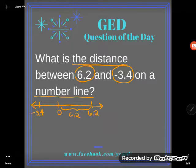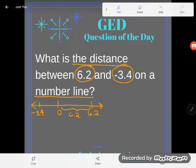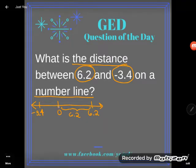Negative 3.4 is even further away from 6.2 than zero is. How far is it away? Well, it's 3.4 units away.